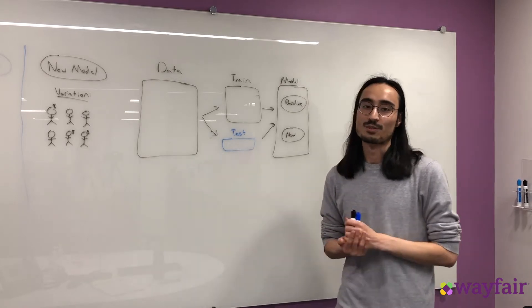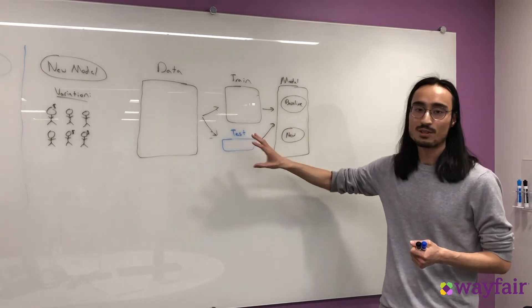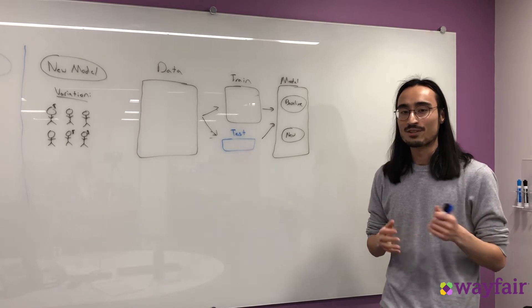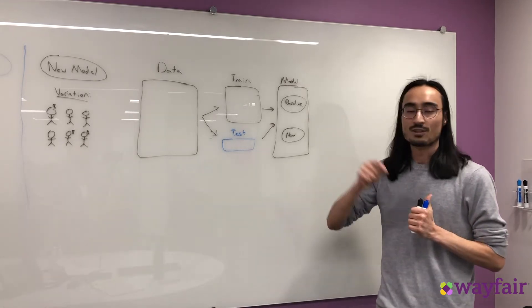With recommender systems, it's very similar in the case that you have this training and test split. The main difference is in the fact that for recommender systems, the final output isn't some discrete or continuous variable. It's usually a list of sorted items.